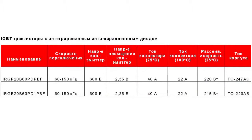Thanks to the small size of the crystal with the same level of power, WARP speed IGBT have a lower gate charge and are less expensive in energy-transforming systems with voltages from 400 to 600 volt and frequencies of 150 kHz.